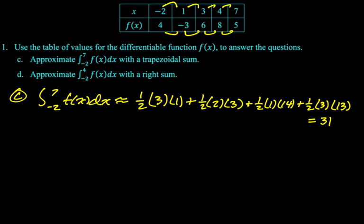All right next up, approximate the integral from negative two to four. So you really got to like keep on top of these things, make sure you're reading the bounds correctly. So we're going from negative two to four, not all the way to seven. We're going to use a right sum. So the integral from negative two to four of f(x)dx is approximately, so it's a right sum.